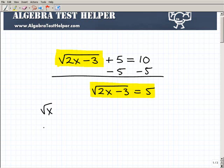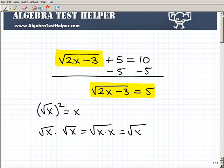if I have the square root of x, for example, and I square it, well, what do I get? I get x, because the square root of x times the square root of x is the same thing as the square root of x times x or the square root of x squared or x.